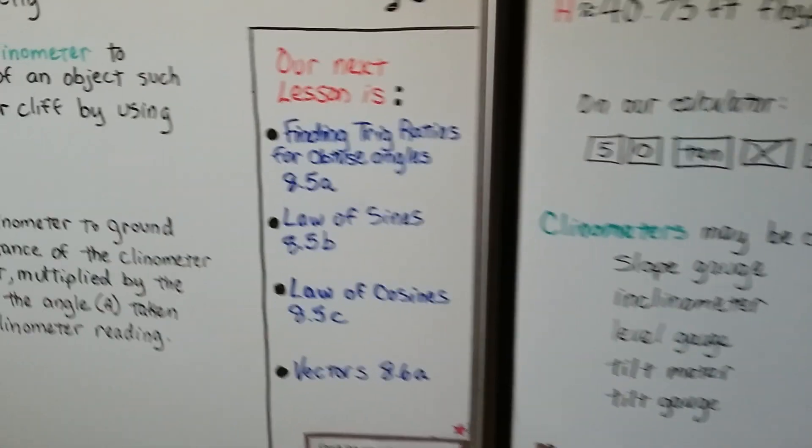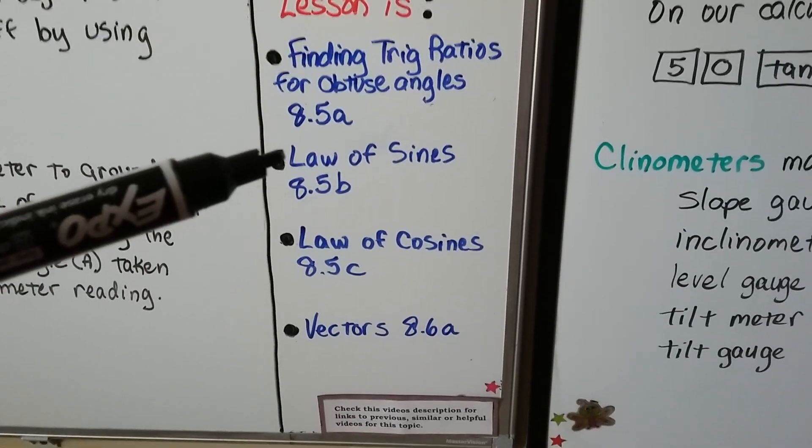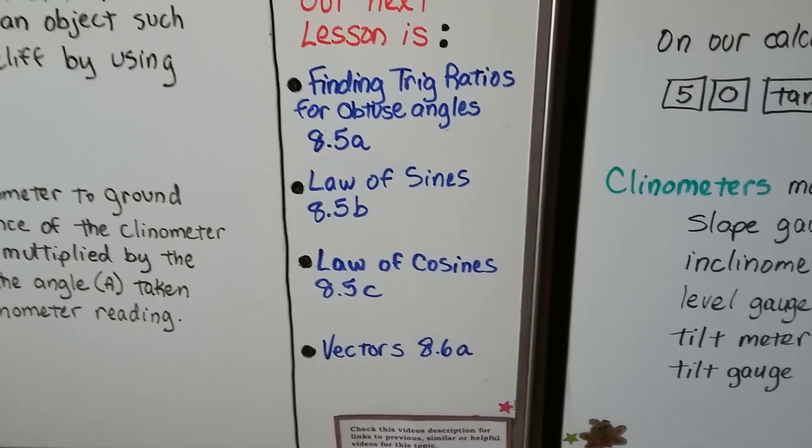Our next lesson is finding trig ratios for obtuse angles. That's 8.5b. Then we're going to do the law of sines and the law of cosines to finish up 8.5 before we move on to vectors.